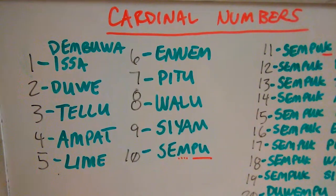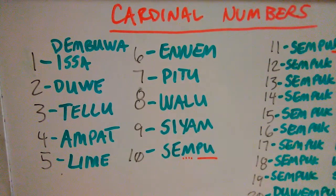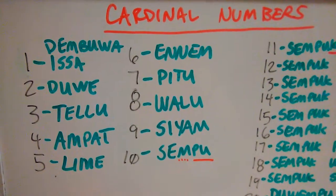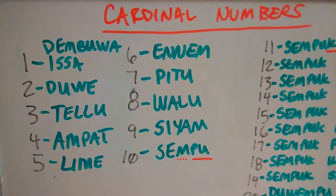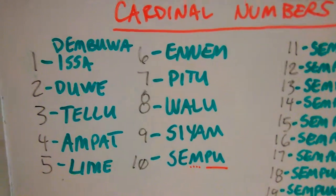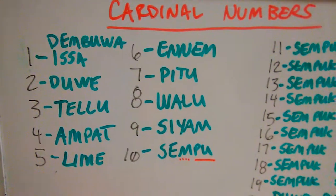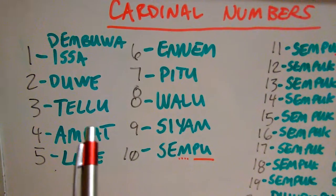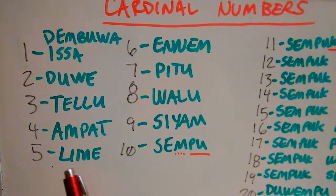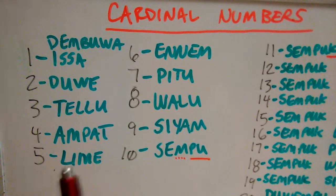The first cardinal number, number one, can be either Dembuwa or Issa. There are two vowels, so we treat it kind of like a geminate consonant — Issa. Number two is Duwe. Three, again with that gemination, is Tellu. Four is Ampat, which is similar to the Malay — Ampat.